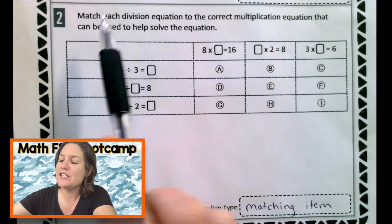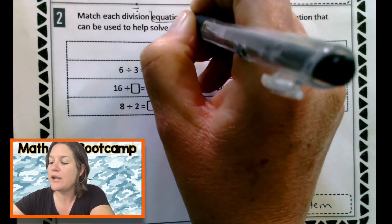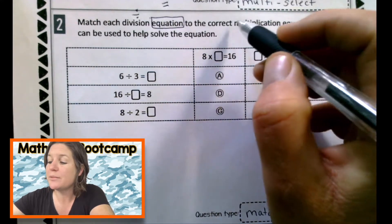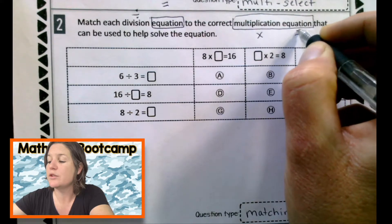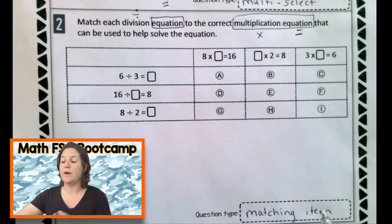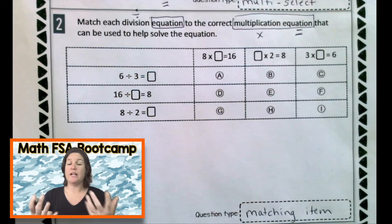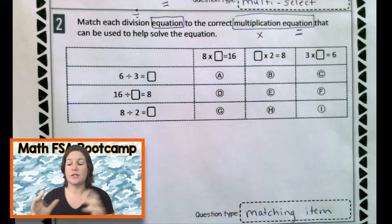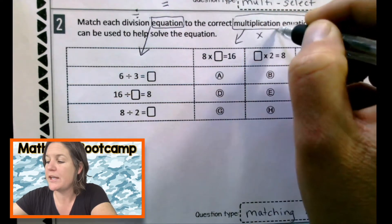Number 2 says match each division equation. So we've got a division equation. Equation means that there is an equal sign to the correct multiplication equation. Multiplication equation, which means that there is an equal sign that can be used to help solve the equation. So again, what we're doing involves fact families. For each fact family, there are two multiplication and two division equations. Here, over here, we've got the division equations. And here are the multiplication equations.